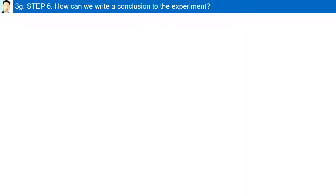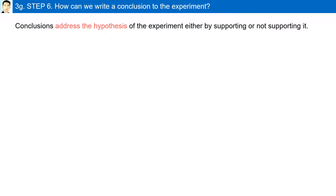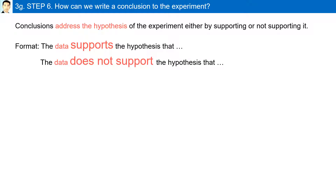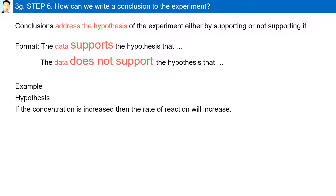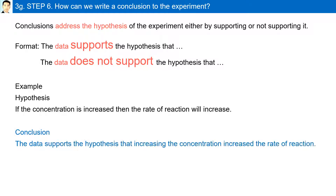How can we write a conclusion to the experiment? Conclusions address the hypothesis of the experiment, either by supporting it or not. The format is: 'The data supports the hypothesis that...' or 'The data does not support the hypothesis that...' For example, the hypothesis states: if concentration is increased, then the rate of reaction will increase. The conclusion: the data supports the hypothesis that increasing the concentration increases the rate of reaction.